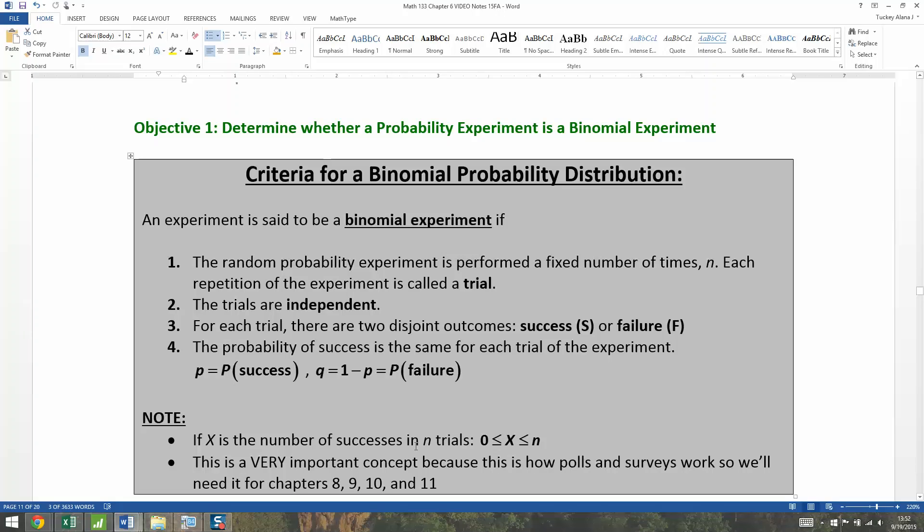The trials should be independent, so one toss should have no effect on the next toss, for example. For each trial, there should be two disjoint outcomes: success and failure. You can't have a third option, that won't work.